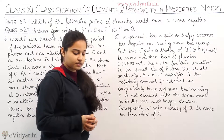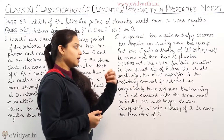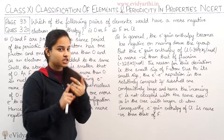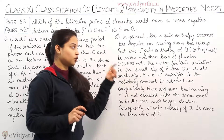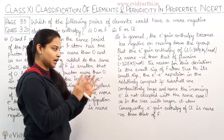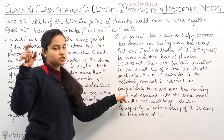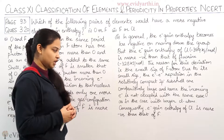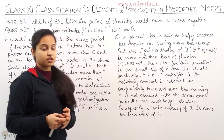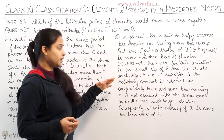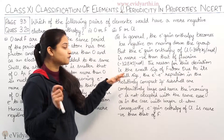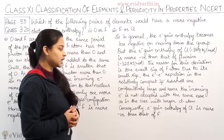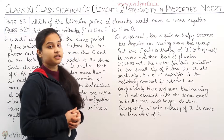The reason for this deviation is the small size of the fluorine atom. Due to its small size, there is significant electron-electron repulsion in the relatively compact 2p subshell of fluorine. This large electron-electron repulsion means the incoming electron is not accepted as easily as in the case of the larger chlorine atom.